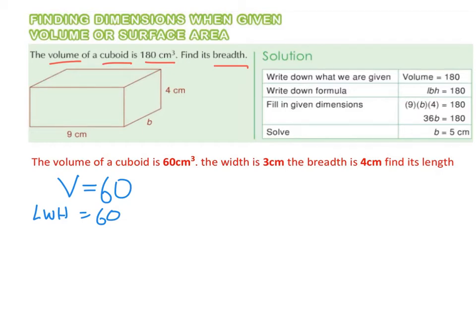Then we fill in our given dimensions. So the length stays as L. The width I'm labeling as 3 with brackets around it. And the breadth was 4, so I'm calling that the height. The height is 4 with brackets around it. So L by 3 by 4 equals 60.